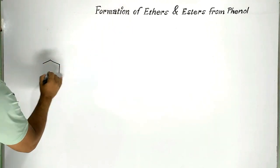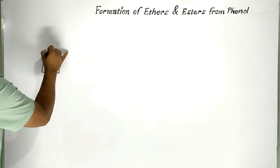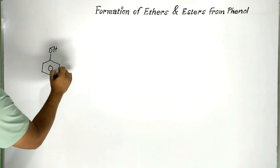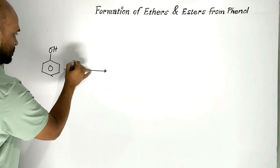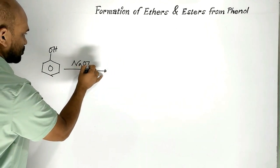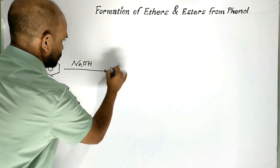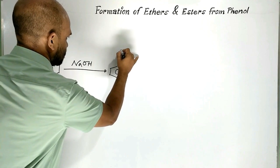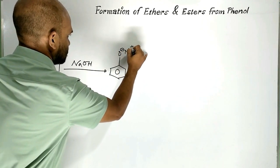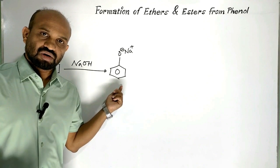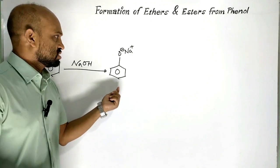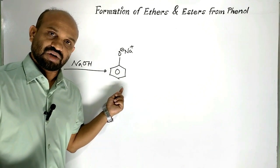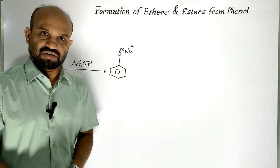Let us take phenol. This is phenol. First of all, phenol is treated with sodium hydroxide to form the salt of phenol. This is the sodium salt of phenol. Its name is sodium phenoxide or sodium phenolate, also known as sodium phenate.